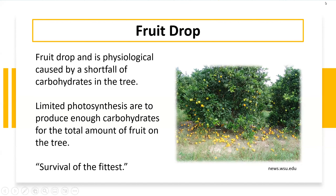Fruit drop is not uncommon in trees, and a lot of times we'll see a lot of fruit drop when it happens sometime in June, and people get really nervous about that because they don't understand why. Fruit drop, or June drop as it's commonly known, is a physiological issue — essentially a shortfall of carbohydrates in the tree due to limited photosynthesis that's occurring.